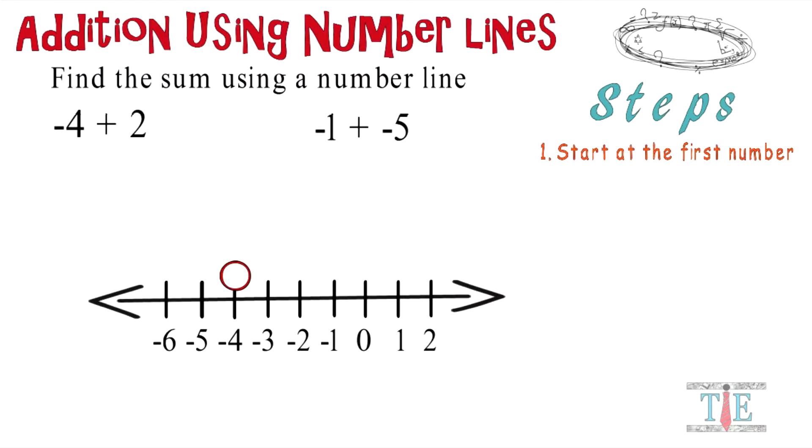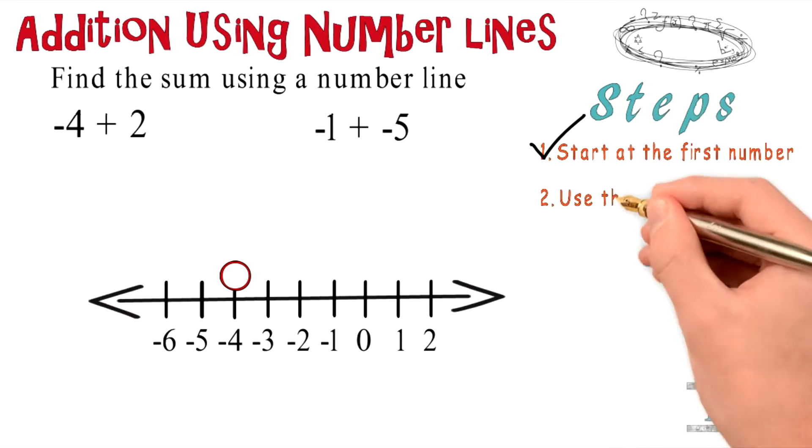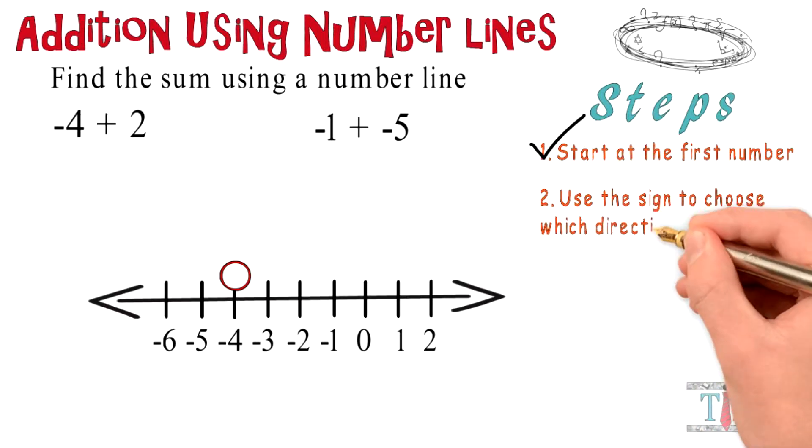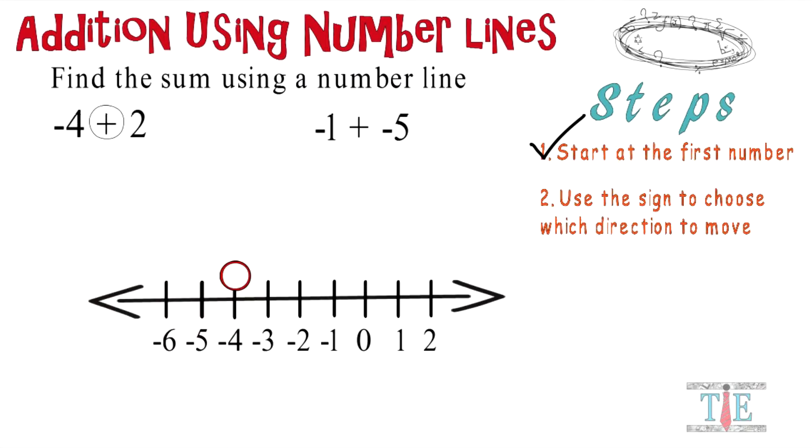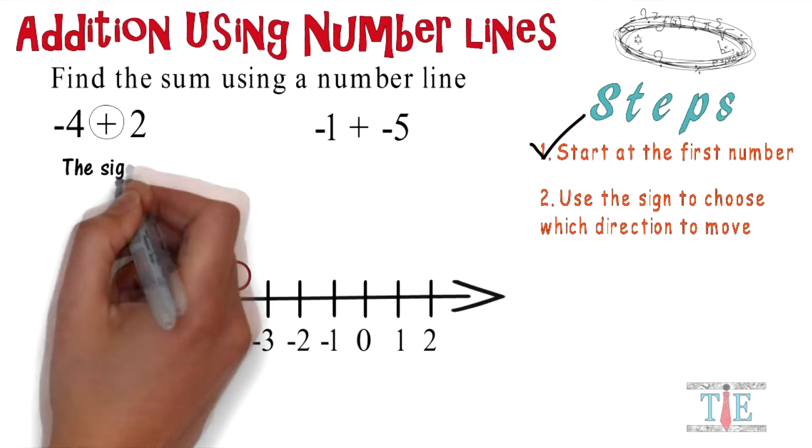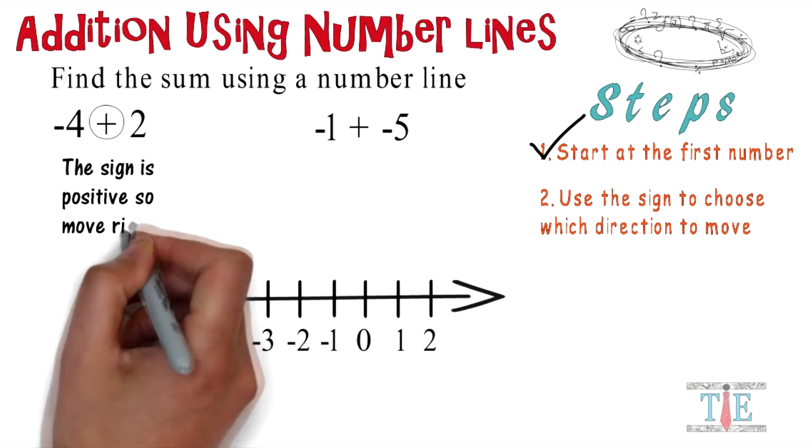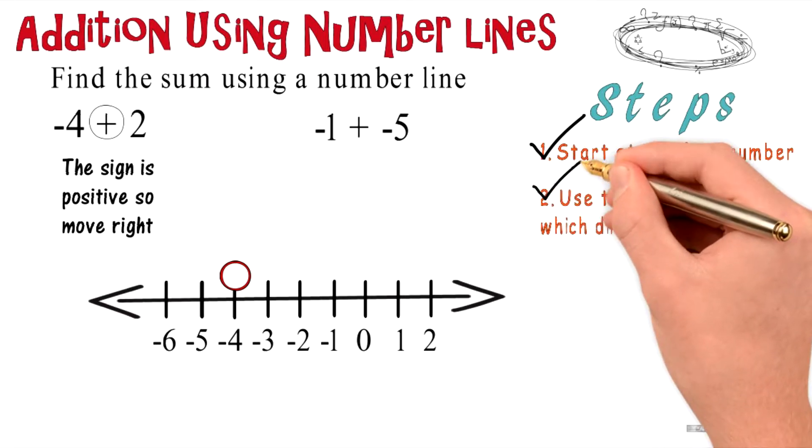Check off the first step, move on to step number 2. Use the sign to choose which direction to move. Well, what sign do we have next? We have a plus sign, so that's positive. The sign is positive, so we're gonna move to the right. Let's check off step number 2.